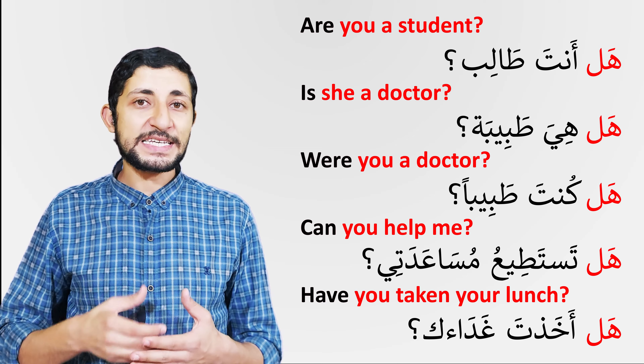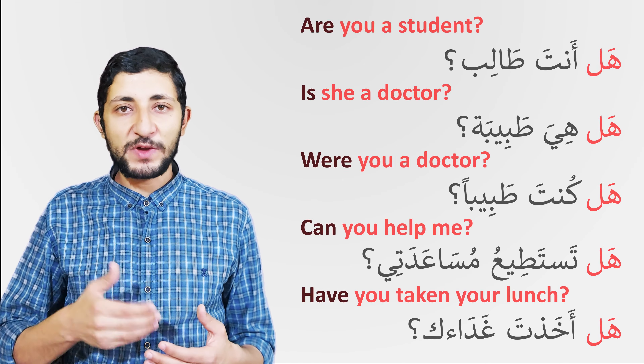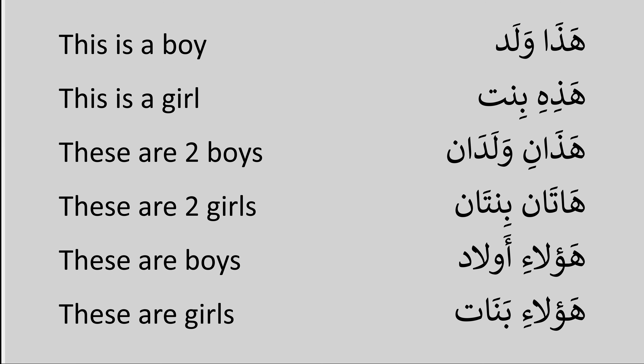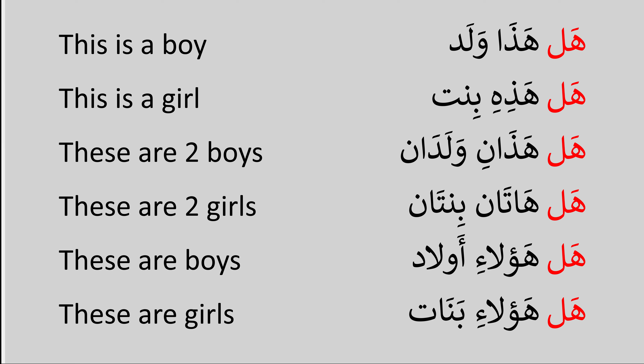Now I want to combine asking yes or no questions with the pointing noun. Let's see these examples. You remember from the second lesson of this course: هذا ولد — This is a boy. هذه بنت — This is a girl. هذان ولدان — These are two boys. هاتان بنتان — These are two girls. هؤلاء أولاد — These are boys. هؤلاء بنات — These are girls. Now I want to ask a yes or no question on these sentences. I'll just add هل in front of the sentence and a question mark at the end — that's it.